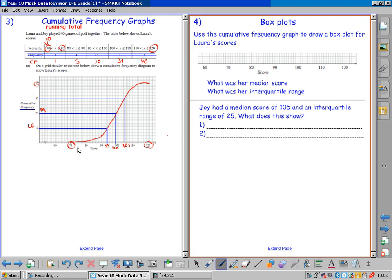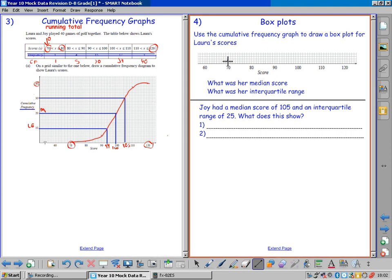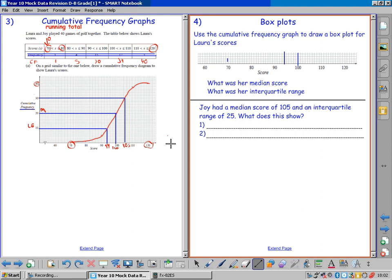We start with our lowest possible score, which is 70. The lowest possible score, 70. The lower quartile, big line, at 94. The median, another big line, represent the median, at 100. The upper quartile, 105. And the highest possible score, 120.